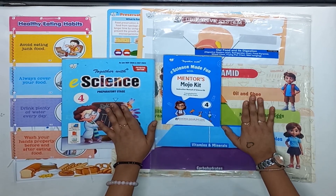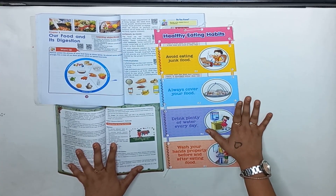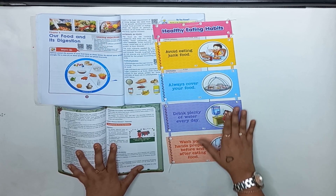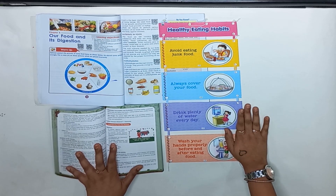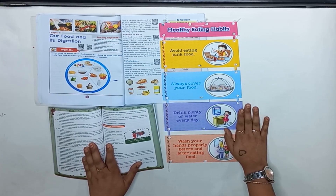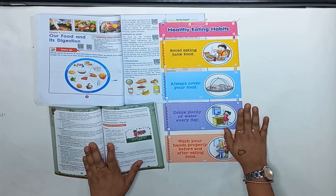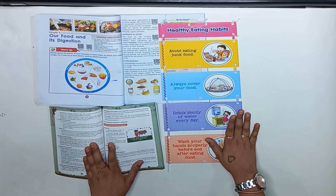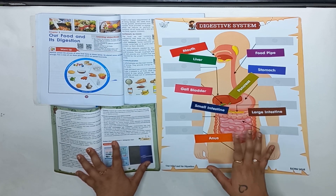Let's start with the first activity: this wall hanging. The teacher can display this wall hanging in the classroom and students can read and observe it daily, learning some healthy habits they need to follow. This activity will develop critical thinking skills, collaboration skills, communication skills, creativity, and responsibility. Some of the sustainable development goals this activity covers are good health and well-being, responsible consumption and production, and zero hunger.